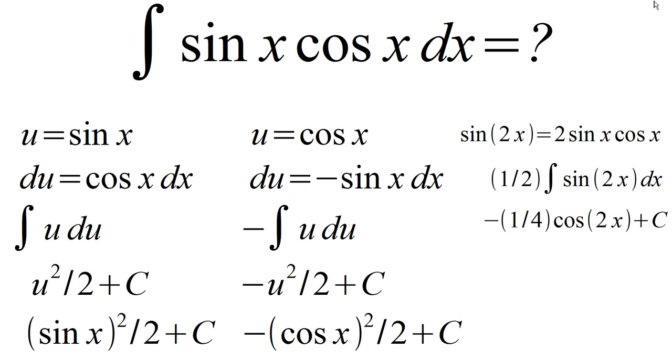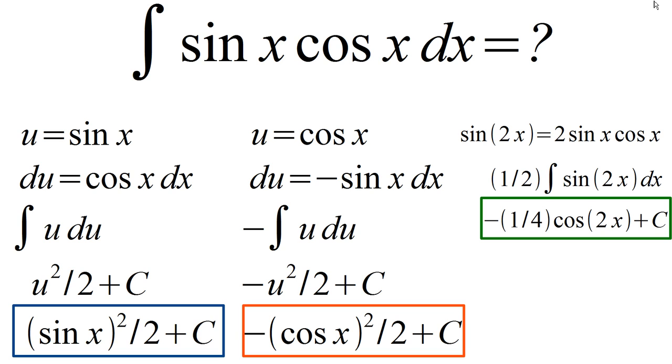So now we have a very interesting result. We have three different ways that we've written the answer of the integral sine x cosine x, and they don't look anything like each other. So how is this possible? How do we have three different answers when we solve this problem in seemingly valid ways?